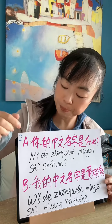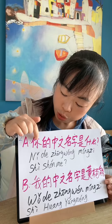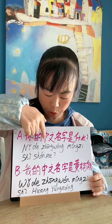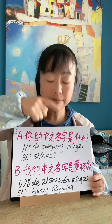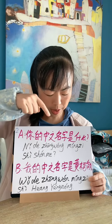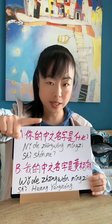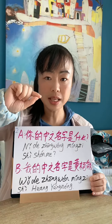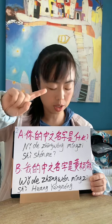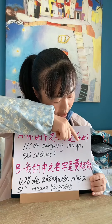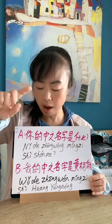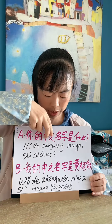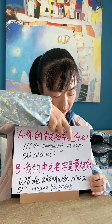你的中文名字是什么. 你的 means 'your', 中文 means 'Chinese language', 名字 means 'name', 是 is a linking word, and 什么 means 'what'. So together it means 'What is your Chinese name?'